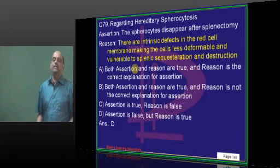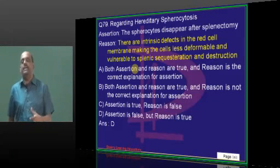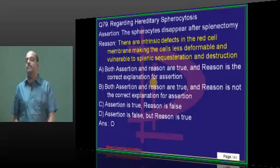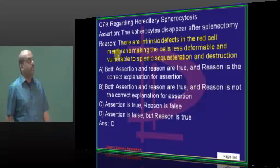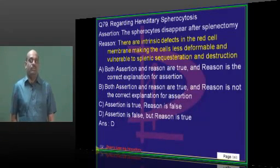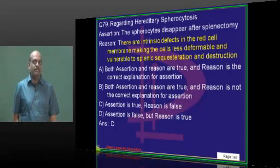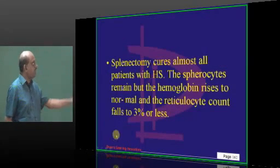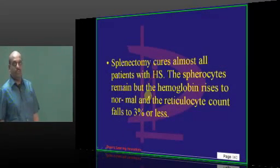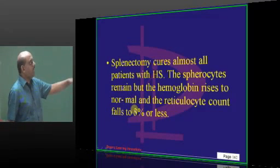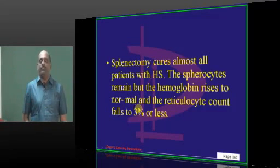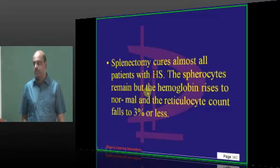Hereditary spherocytosis — there is an intrinsic defect in the cell wall of the RBC as all of you know. But if you do splenectomy, will the spherocytes disappear? No sir, spherocytes do not disappear — they remain. But the hemoglobin will rise from an anemic level to a normal level if you do splenectomy.